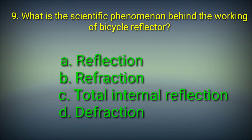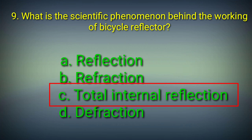Ninth question: What is the scientific phenomenon behind the working of a bicycle reflector? Options: A. Reflection, B. Refraction, C. Total internal reflection, D. Diffraction. Answer: Option C. Total internal reflection. The scientific phenomenon behind the working of a bicycle reflector is total internal reflection.